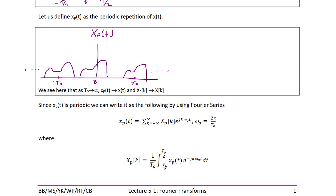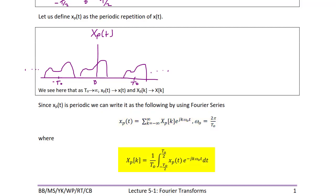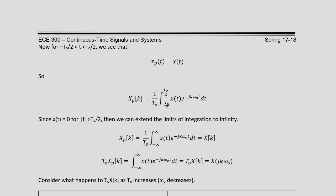Since xp(t) is a periodic signal, we can write it using the Fourier series: xp(t) equals the summation from k equals negative infinity to infinity of xp(k) e^(jkω₀t), where ω₀ is 2π over t₀. The Fourier series coefficient is xp(k) equals one over t₀ times the integral over one period of xp(t) e^(−jkω₀t) dt. Since the signal is time-limited and xp(t) equals x(t) within one period, we can rewrite xp(k) as one over t₀ times the integral from −t₀/2 to t₀/2 of x(t) e^(−jkω₀t) dt.